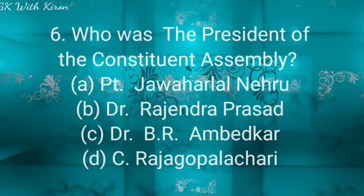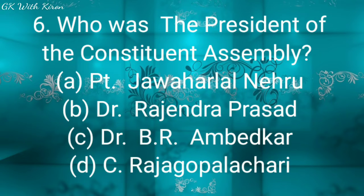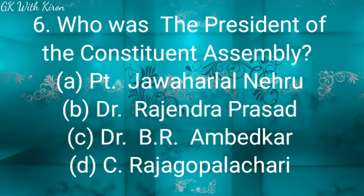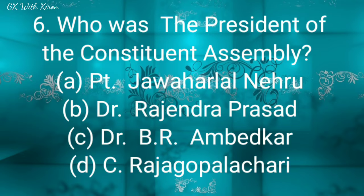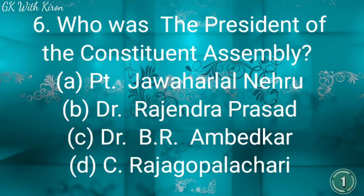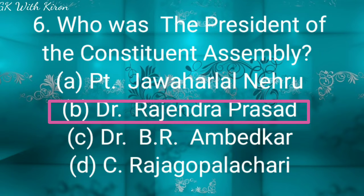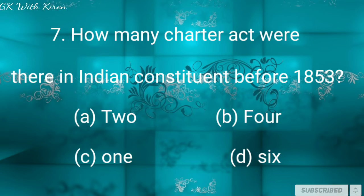Question six: Who was the President of the Constituent Assembly? Option A: Pandit Jawaharlal Nehru, option B: Dr. Rajendra Prasad, option C: Dr. B.R. Ambedkar, option D: Rajagopalachari. The correct answer is Dr. Rajendra Prasad.